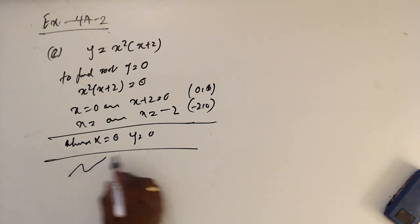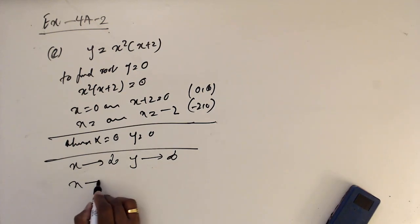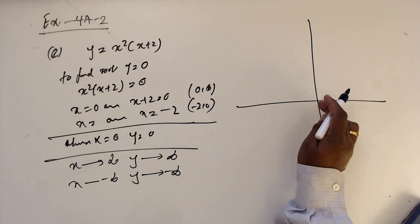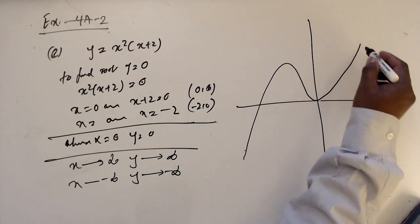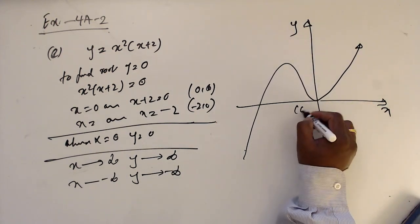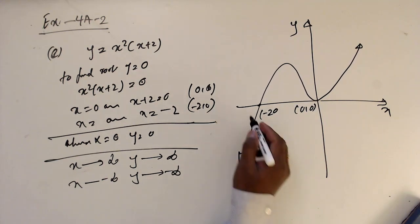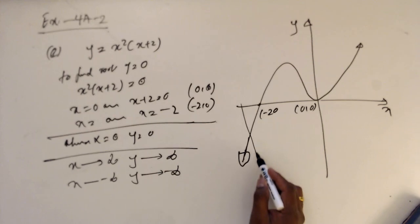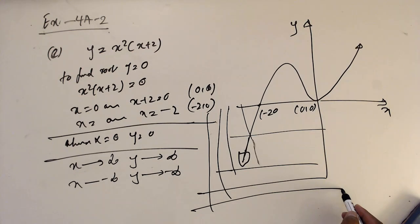The coefficient of x cubed is positive, so we expect this kind of graph: x going to positive infinity means y goes to positive infinity, x going to negative infinity means y goes to negative infinity. Here 0 is a repeated root, and the curve goes around the vertex near (minus 2, 0).